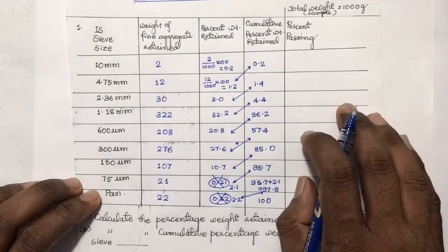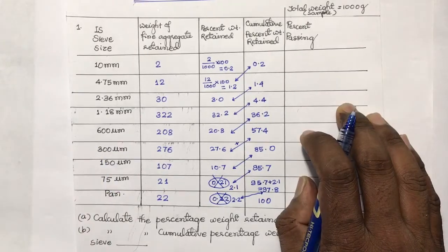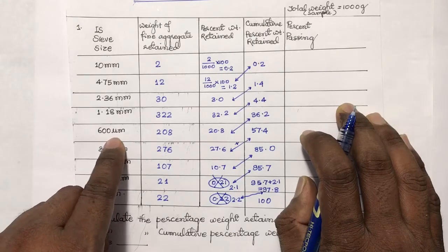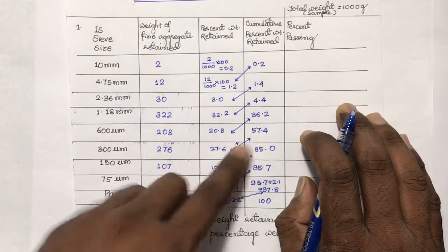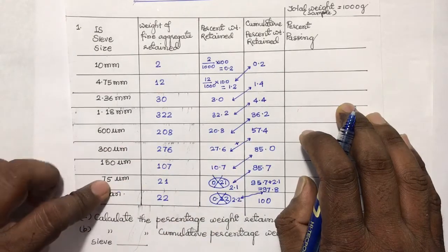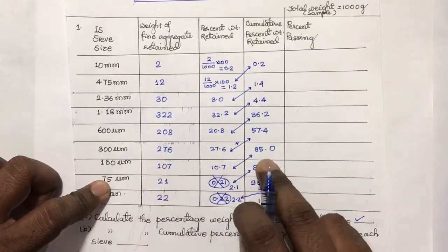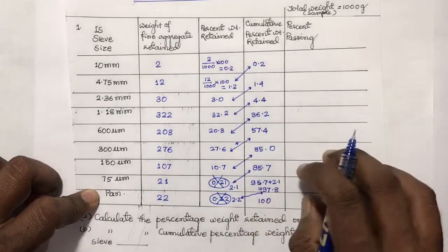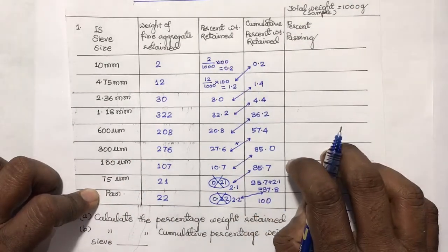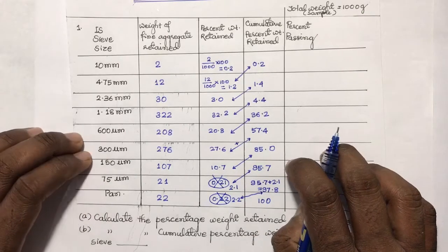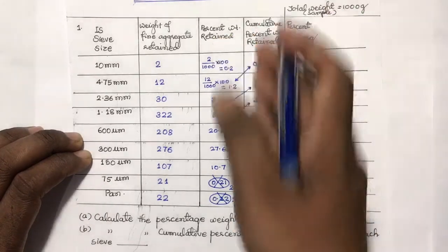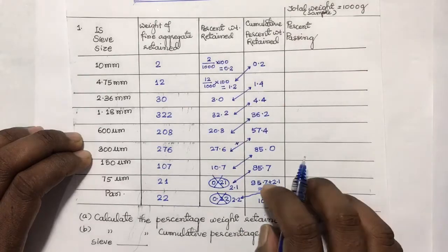So these are the various cumulative weight percentages retained on each sieve. The cumulative weight percentage retained on the 600 micron sieve is 57.4, for 300 micron it is 85.0. This is the solution for the second problem.